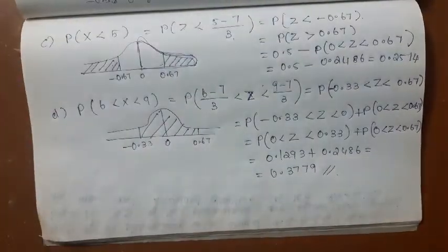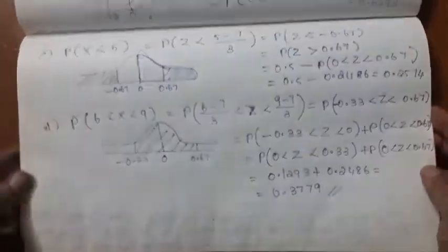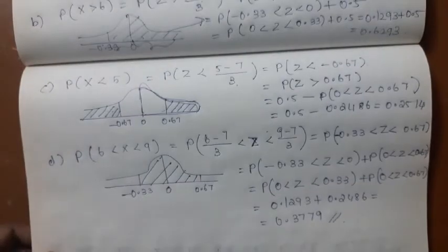So this is how you find the required areas in a normal distribution.